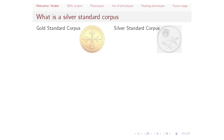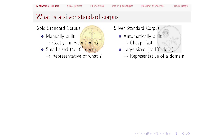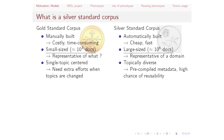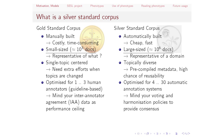Here's a comparison of gold standard versus silver standard. Gold standard is built by hand — costly, time-consuming, small-sized at about 1,000 documents, centered around a single topic, and optimized for one to three human annotators. Silver standard is built automatically, has a large size of one million documents, can be quite diverse in domain topics, and is optimized for four to thirty annotation solutions.